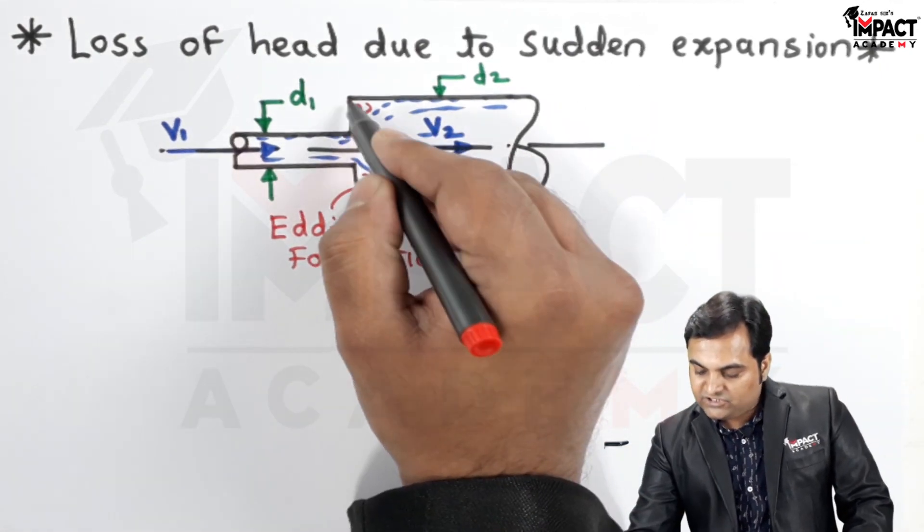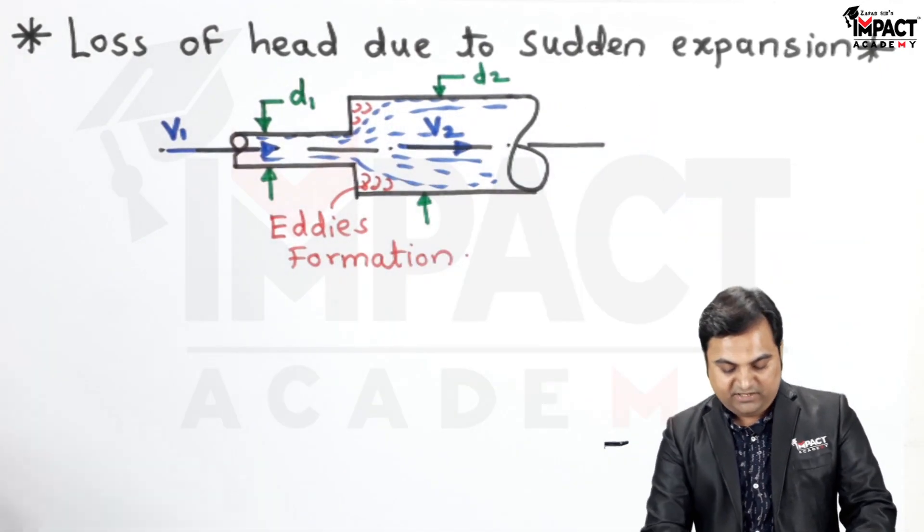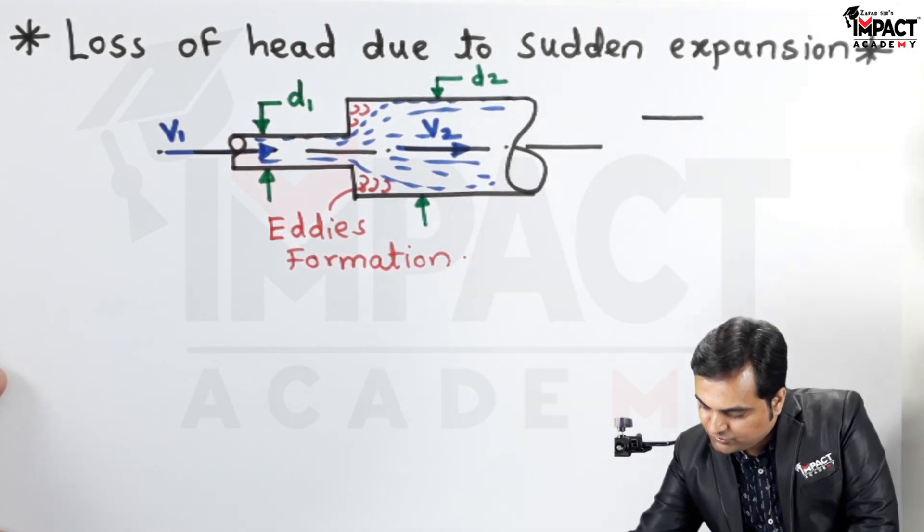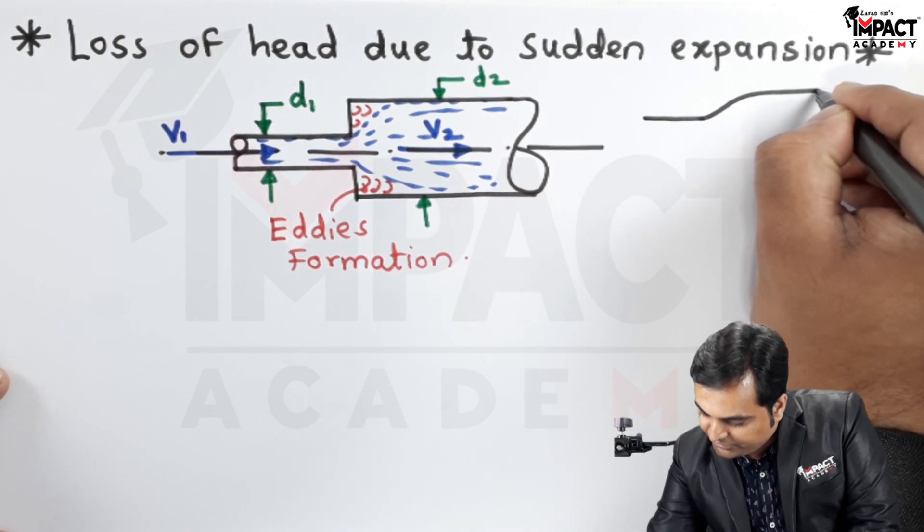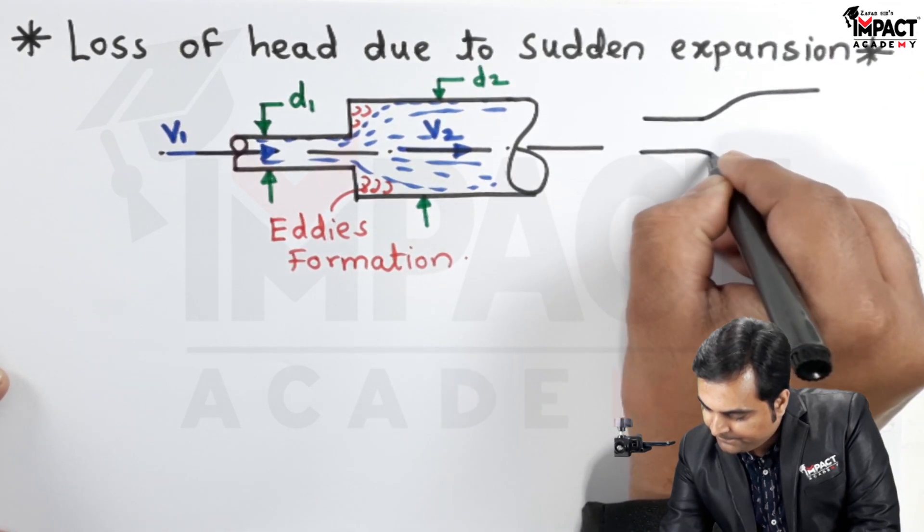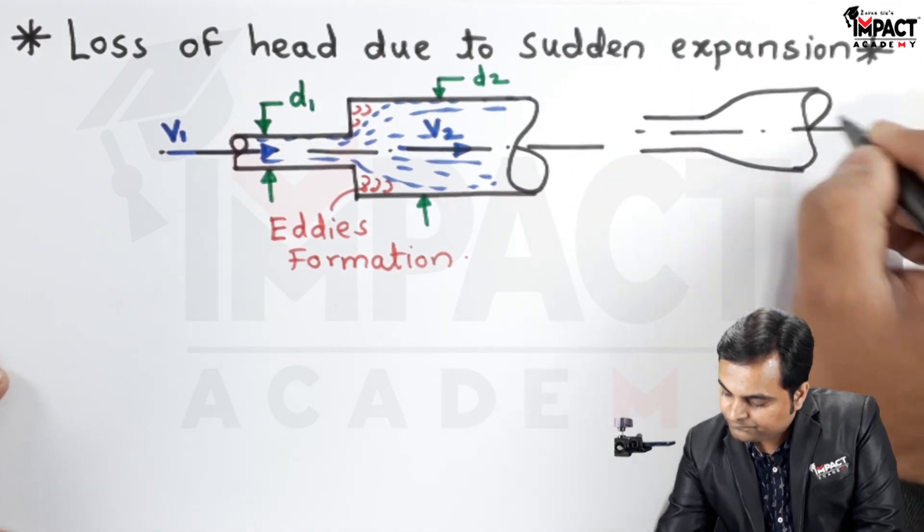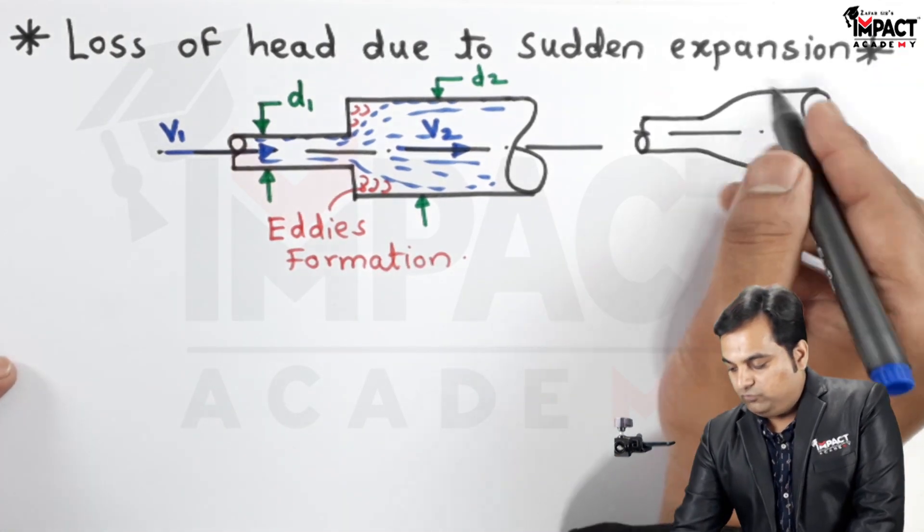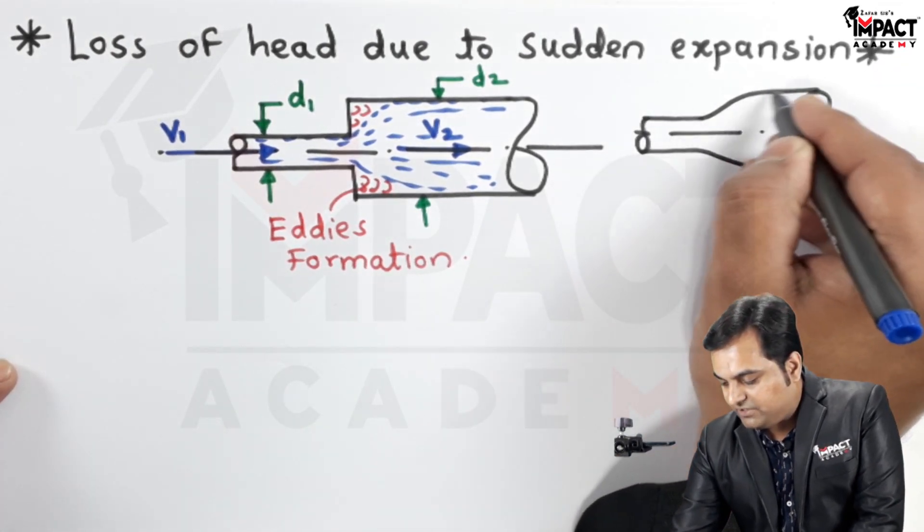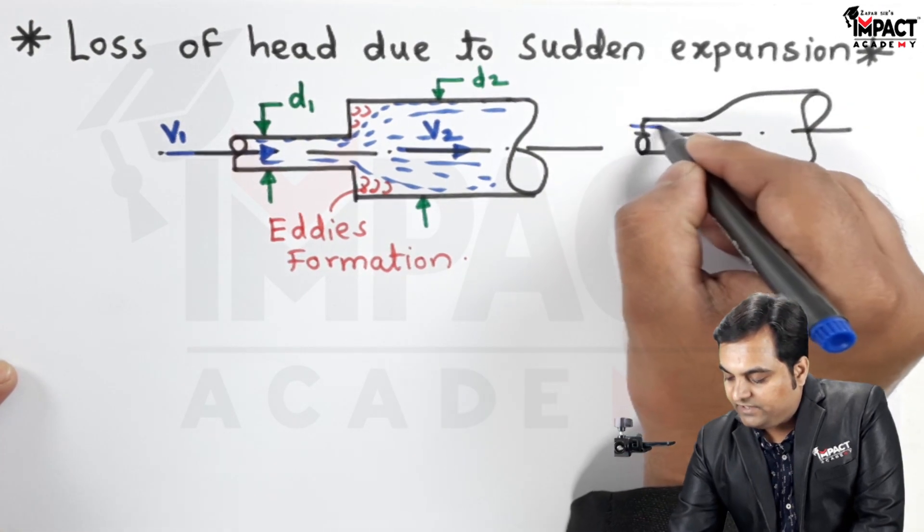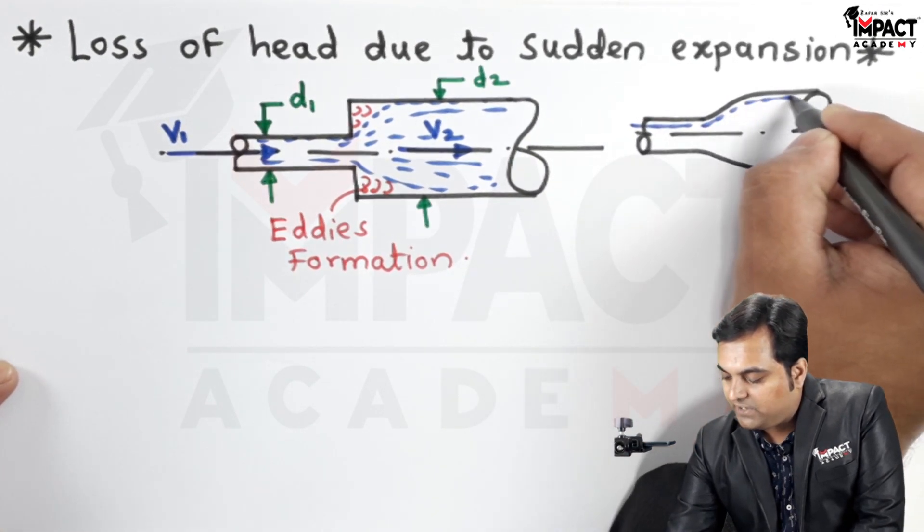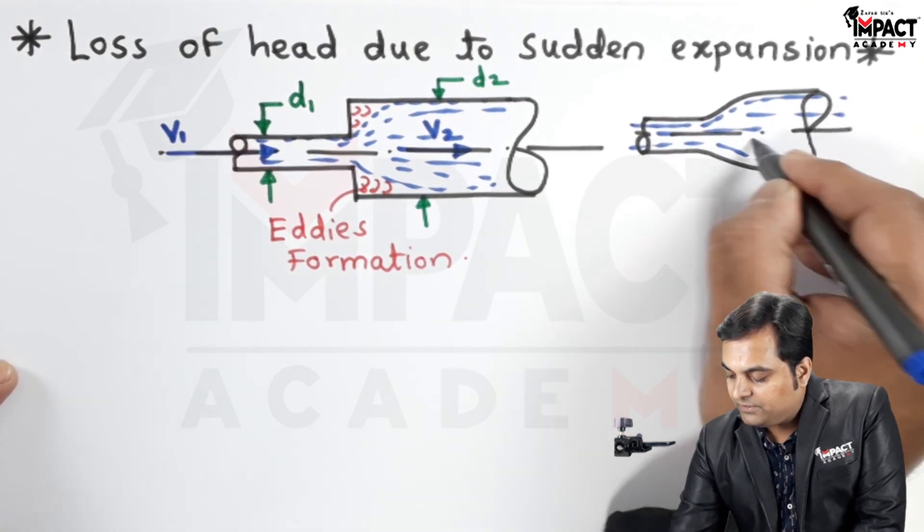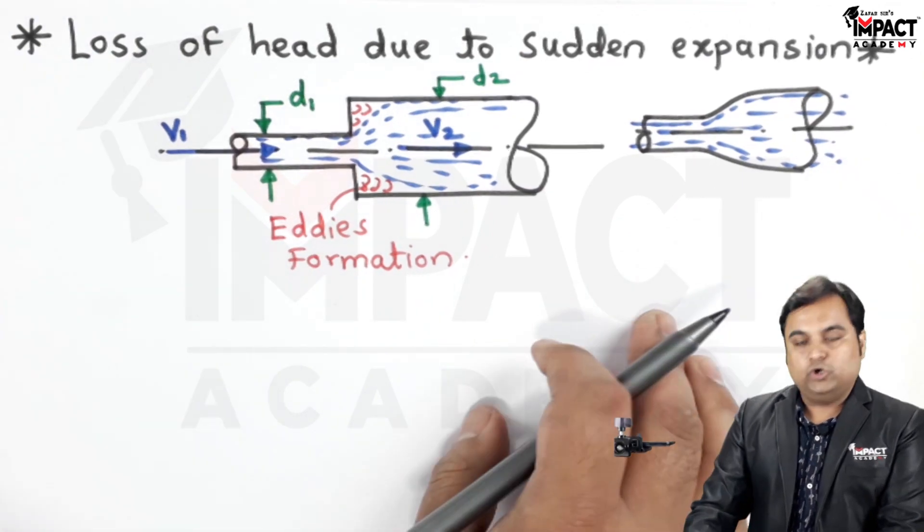If this section, instead of being sudden, would have been a gradual expansion like I am showing here as an example, the fluid would be following this path or boundary without any eddies formation or separation, and in that case there won't be any losses.